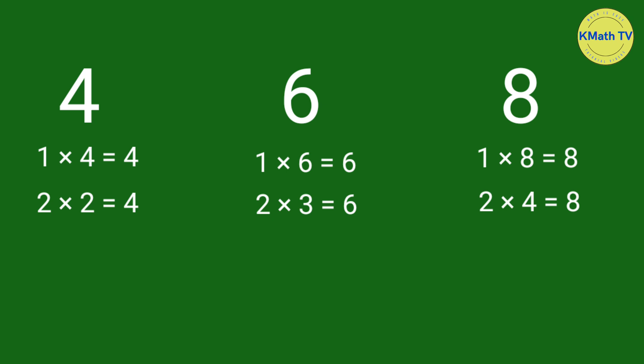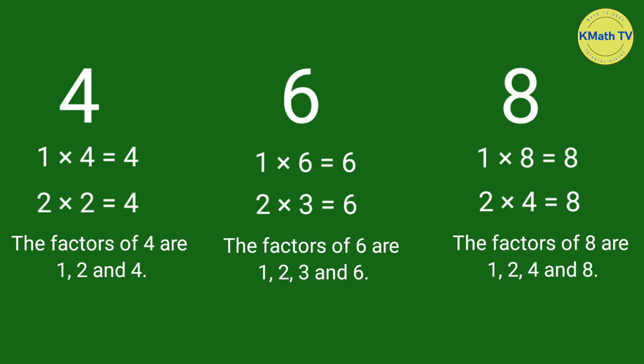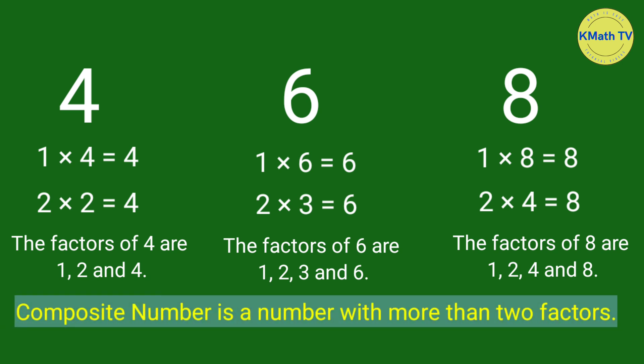As you can see, these numbers have more than 2 factors. 4 has 3 factors. 6 and 8 have 4 factors. These numbers are examples of composite numbers. Composite number is a number with more than 2 factors.